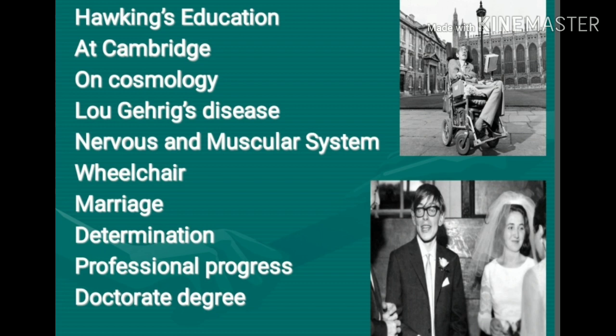Hawking's education at Cambridge marked a turning point in his life as he focused on cosmology in his studies. Then he was first stricken with Lou Gehrig's disease, a weakening disease of the nervous and muscular system that eventually led to his total confinement in a wheelchair. He got married in 1965, and his marriage gave him the determination to live and make professional progress in the world of science. He received his doctorate degree in 1966.